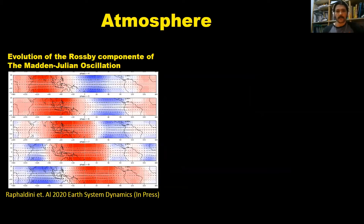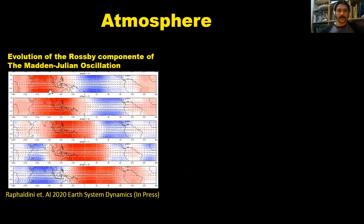Teleconnections are connections between the weather in different regions of the globe. For instance, the Madden-Julian Oscillation is a particular phenomenon that is known to connect the weather in the Pacific with the weather in South America.